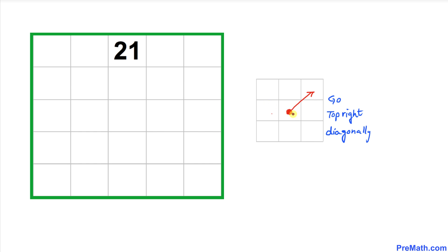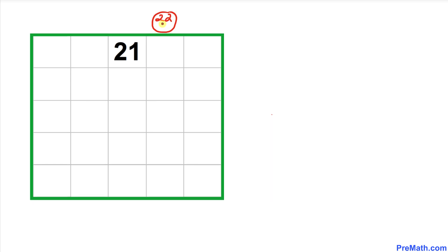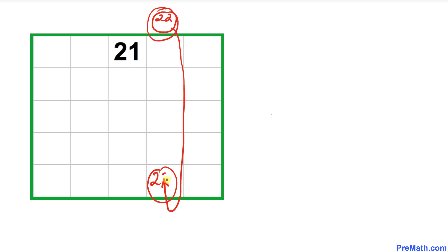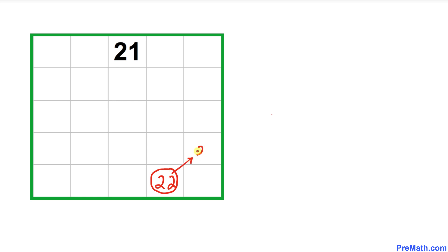Here is the very first step. We will always start by going in a diagonal direction — that means going top-right. After 21, the next number is 22. Since 22 lands outside the magic square, we apply the wrapping rule: we pretend that the outside box is connected to the opposite side, so 22 shows up on the other side.